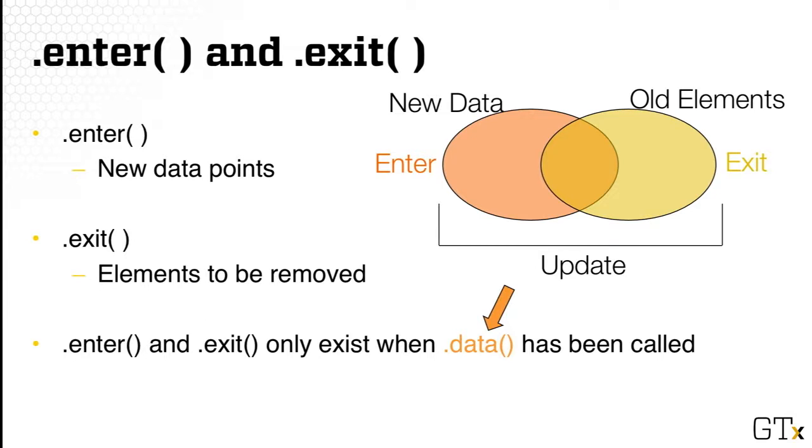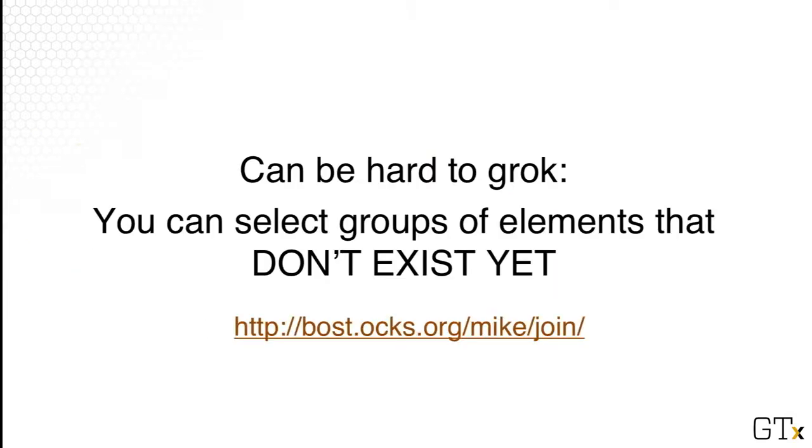This hopefully will give you a more concrete idea about what Enter, Update, Exit means. That's an important thing to know, because that is how D3 allows you to do transitions, how to handle dynamic data, and so on. If it's still a little abstract, I highly recommend that you go to this link down there. Very, very good example to help you better understand what all these phases mean.